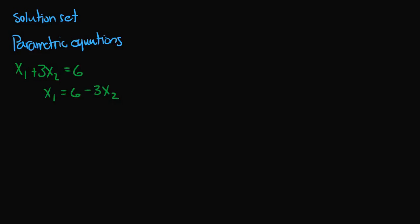The free variable is x2, and the reason we call it free is because x2 can take on any real number. If x2 was 0, then x1 would be 6 minus 3 times 0, which is 6. If x2 was 1, then 3 times 1 is 3, and 6 minus 3 is 3. You could go on and choose any value of x2, any real number, and get a corresponding x1 value. So x1 depends on x2, meaning x1 is not free — x2 is free. This tells us the equation has many solutions.